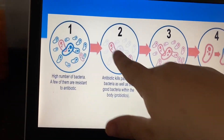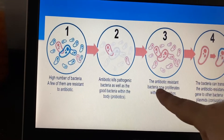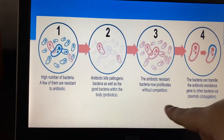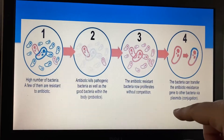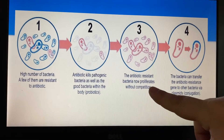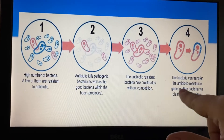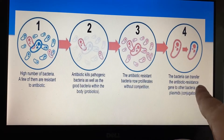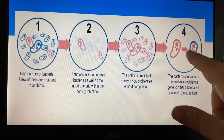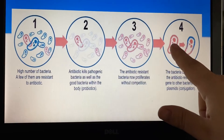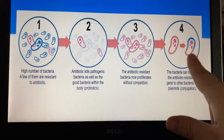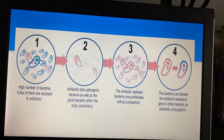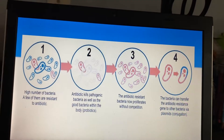Only those two little pink ones survive, but look what happens — they rapidly reproduce. The antibiotic-resistant bacteria now proliferate without competition, and that bacteria can transfer the antibiotic resistance to others. So the blue one is transferring that DNA to new bacteria, making it also resistant to antibiotics. Now all the bacteria will be resistant.